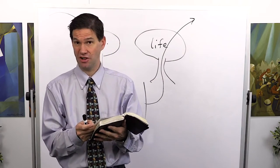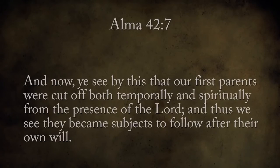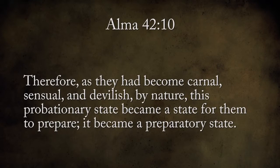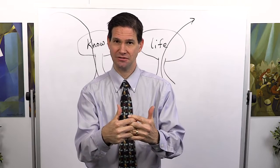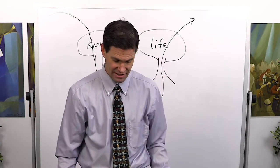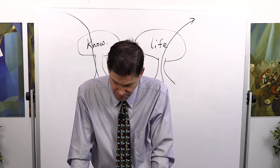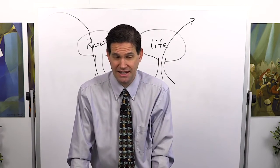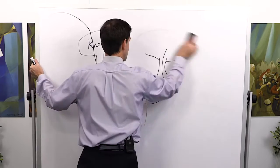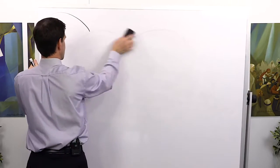So they become fallen. It's appointed for man to die. Now, verse 7: we see by this that our first parents were cut off both temporally and spiritually from the presence of the Lord, and thus we see they become subjects to follow after their own will. Verse 10: Therefore, as they had become carnal, sensual, and devilish by nature, this probationary state became a state for them to prepare. It became a preparatory state. Now, we get the plan of salvation, and we get this probationary period of life called mortality where we get to move forward in these great tests.